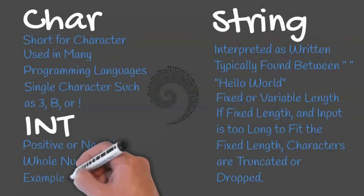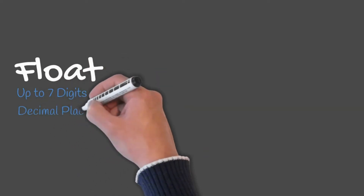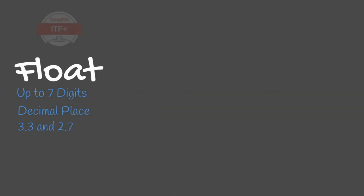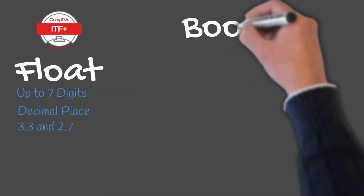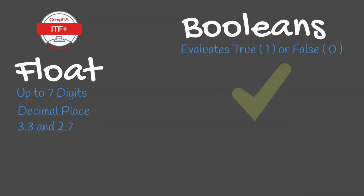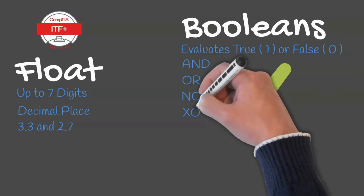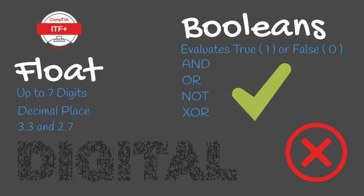Examples of an integer include 3, 10, or negative 15. Floats contain up to seven digits and include at least one decimal place — 3.3 and 2.7 would be examples of floats. Booleans evaluate whether a condition is true (1) or false (0). Boolean logic includes comparisons such as AND, OR, NOT, and XOR. AND refers to multiple values existing in a statement.